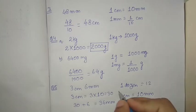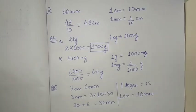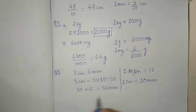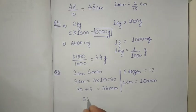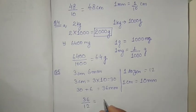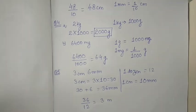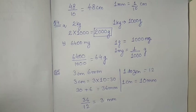The total height is 36 mm for one dozen buttons arranged one above another. To find the height of one button, we divide 36 by 12, and we get 3 millimeter.